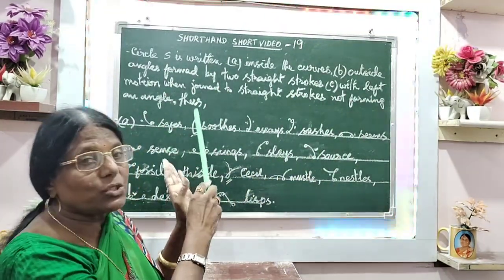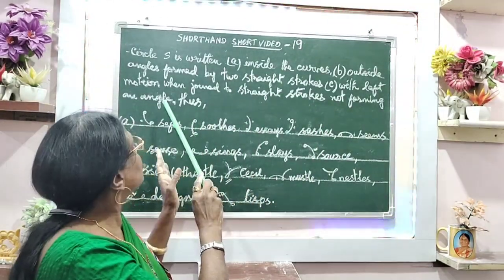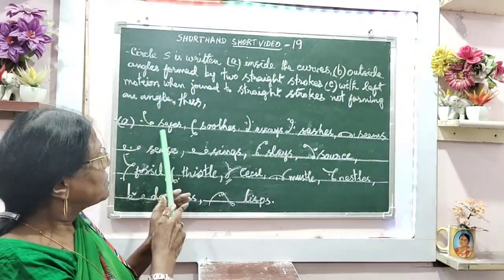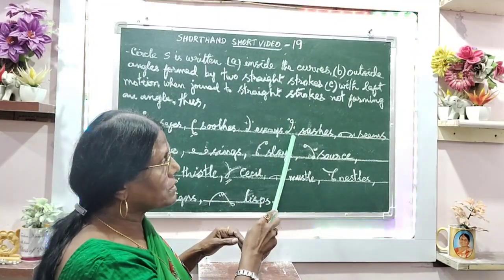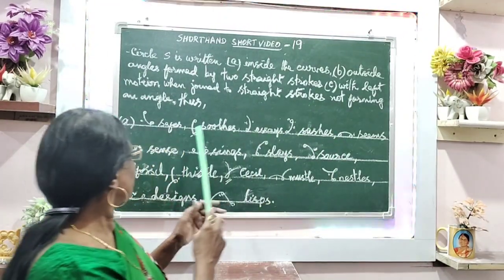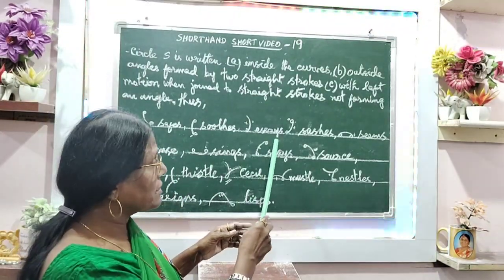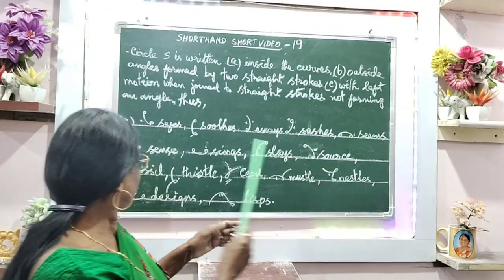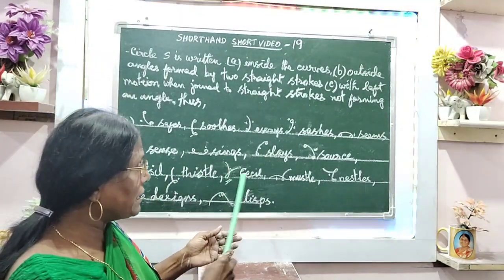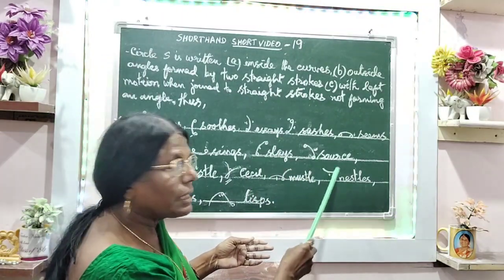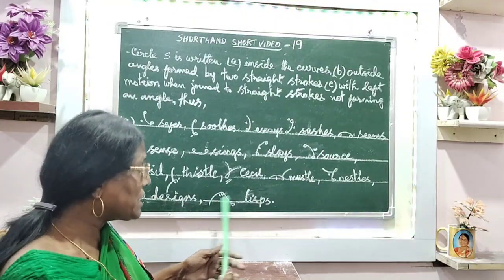With left motion when joined to straight strokes not forming any angle. Thus: saves, suits, essays, sashes, seams, scents, slays, swords, fossil, tizzle, sizzle, muzzle, nestles, designs and lists.